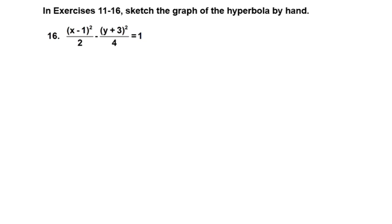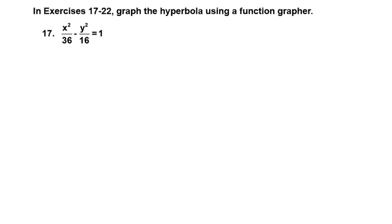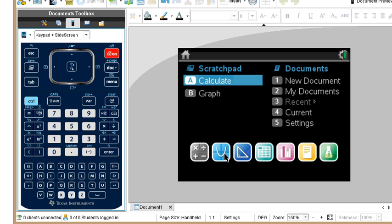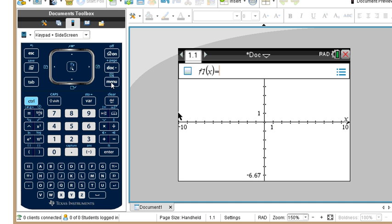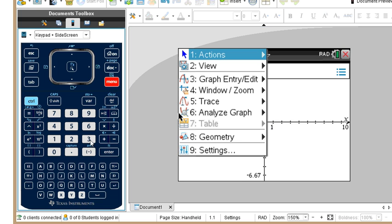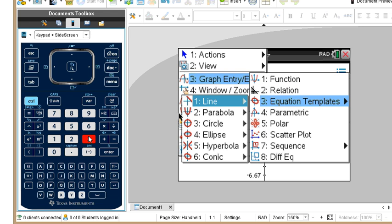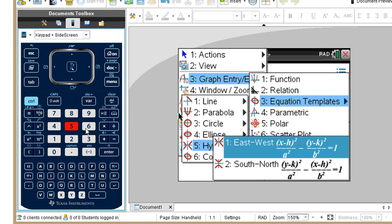The next set is exercises 17 through 22: graph the hyperbola using a function grapher. I'm going to graph problems 17, 20, and 21 to get a variety. On our TI Nspire CX calculator, we get a graph page and go to menu, graph entry/edit, equation templates, and select 5 for hyperbola. For problem 17, an east-west hyperbola, we choose version 1, since our semi-major axis is underneath the x term.